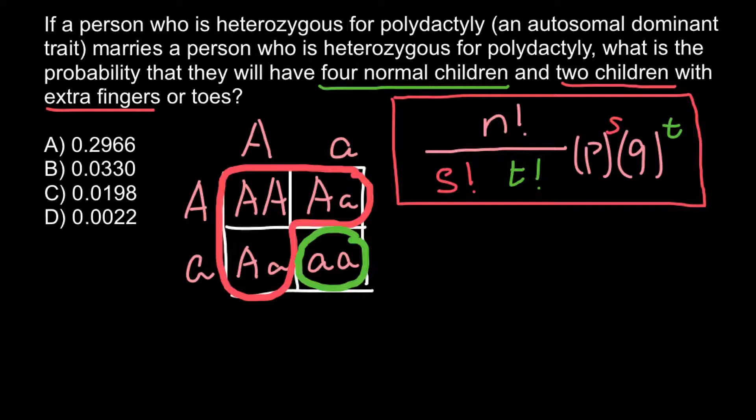This formula can be used to solve many other problems, not just genetics problems. In the formula, 'n' stands for the total number of variants — the sum of s and t. So let's now put numbers into our calculations. The total number of children is six, so we place 6 factorial on the top.